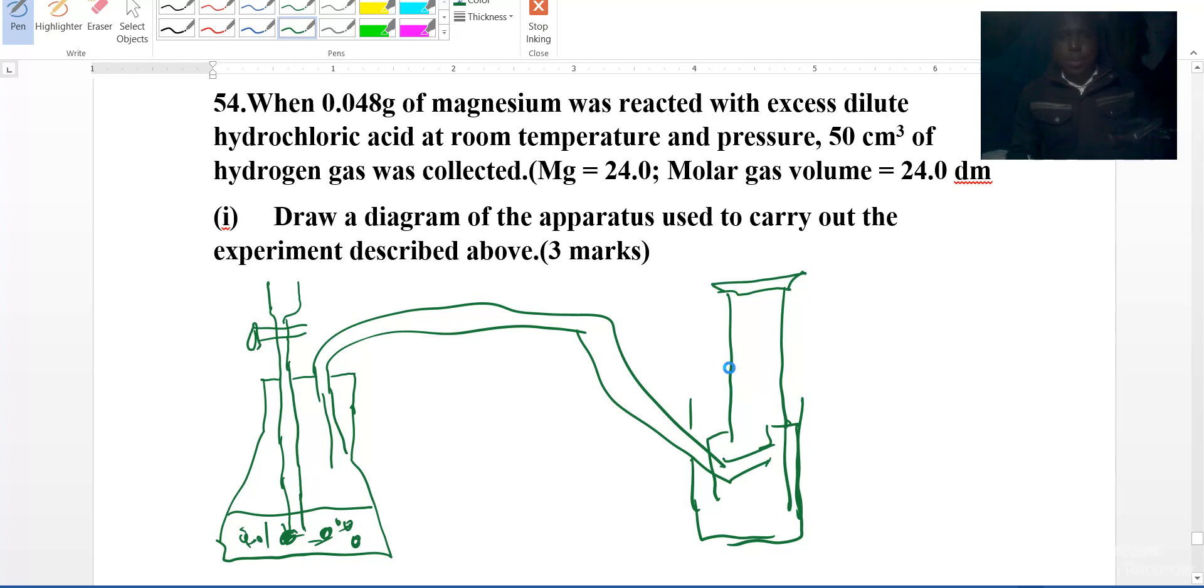This is the delivery tube. This is magnesium. Here you put some HCl, and you are done. That is now the diagram that you are required to draw.